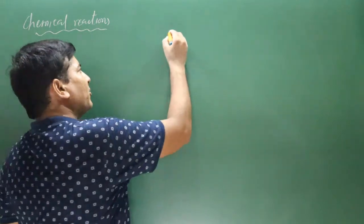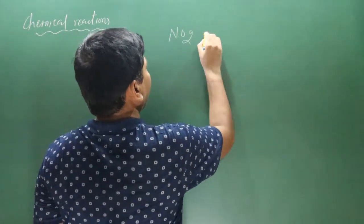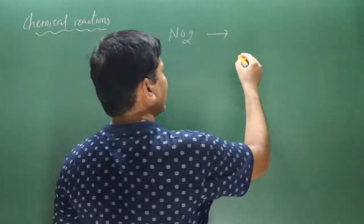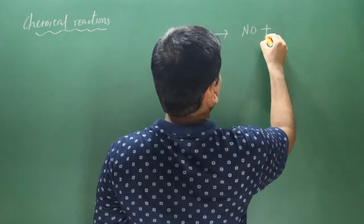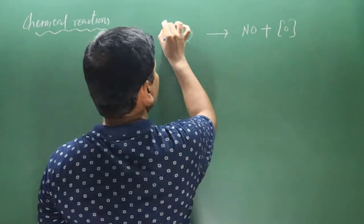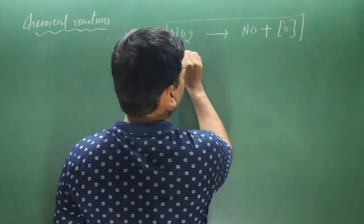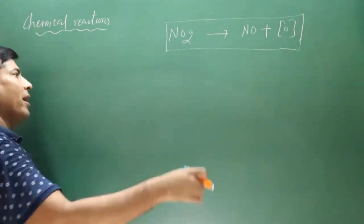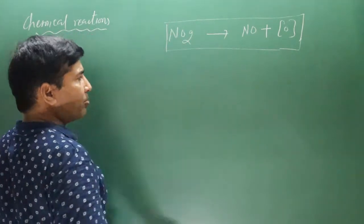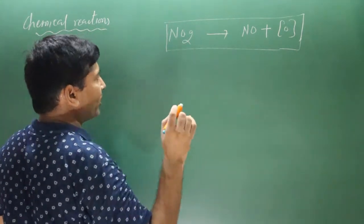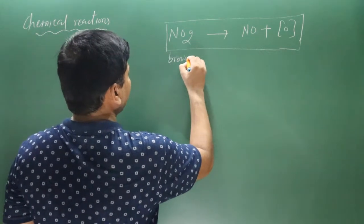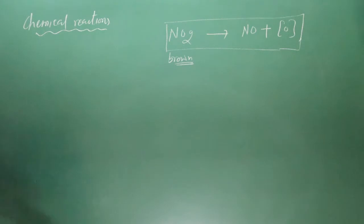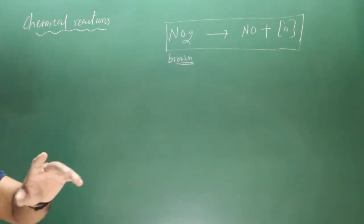NO2 acts as a better oxidizing agent because it releases nascent oxygen: NO2 → NO + [O]. This is the base equation to use. NO2 has an odd number of electrons, so it is a brown-colored gas. N2O4 has no color. NO2 is also a poisonous gas.